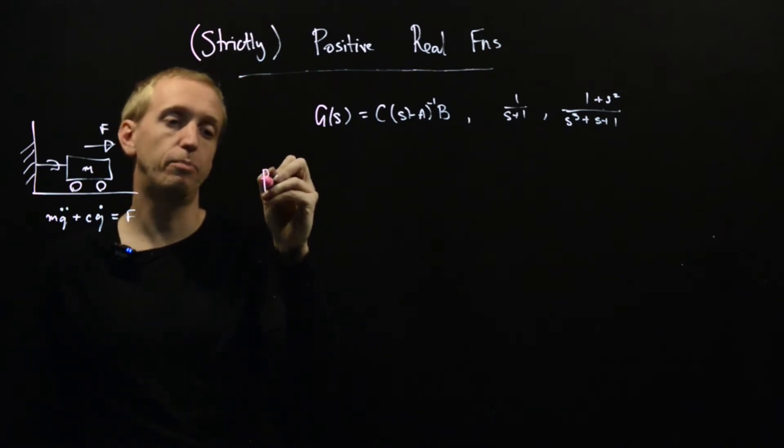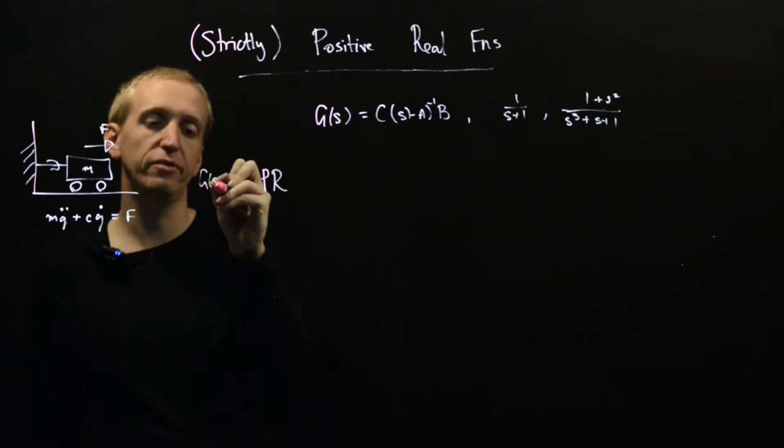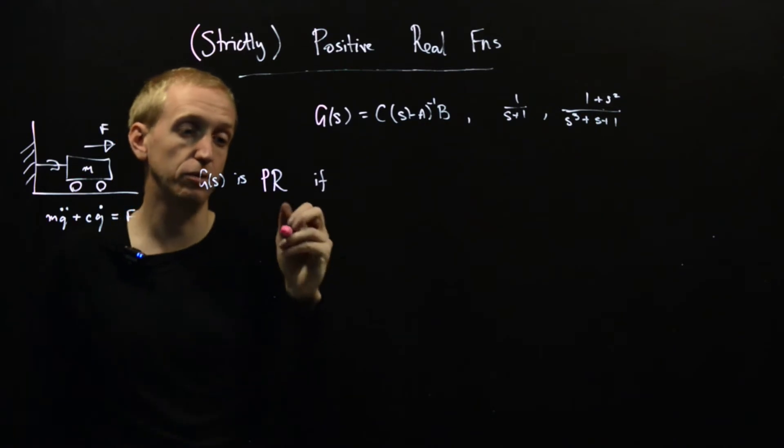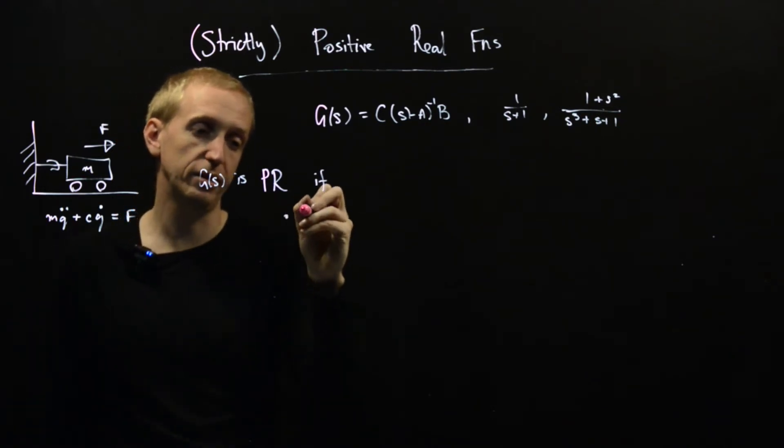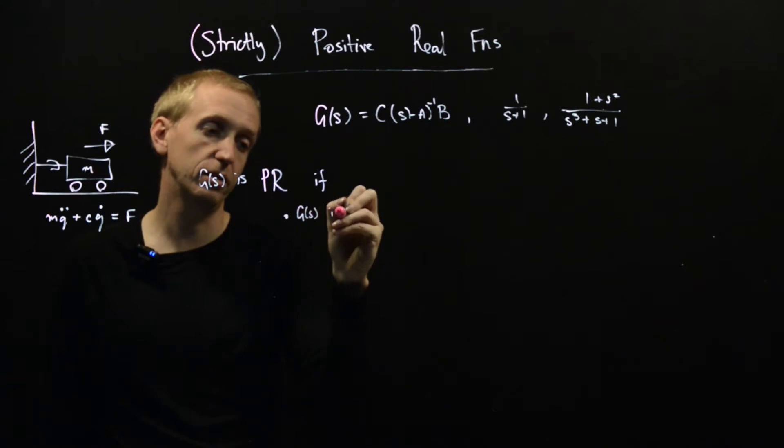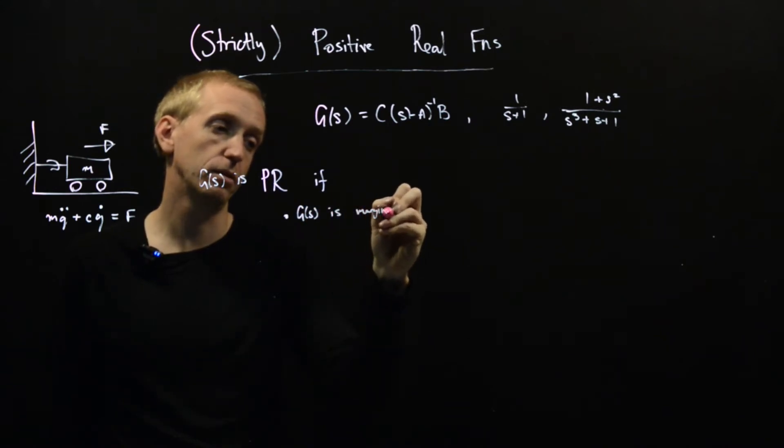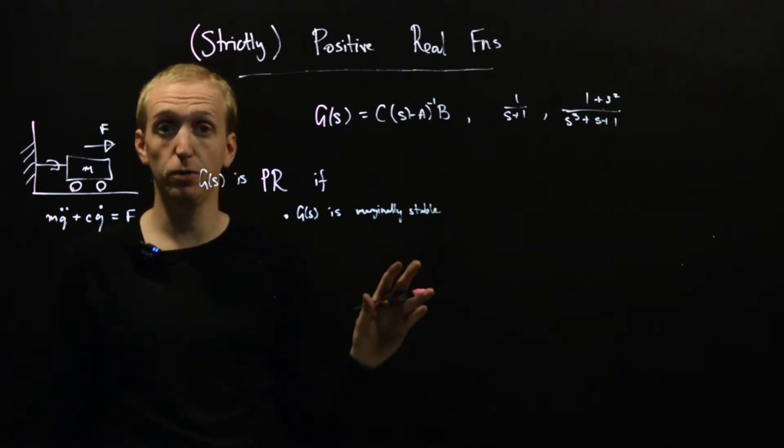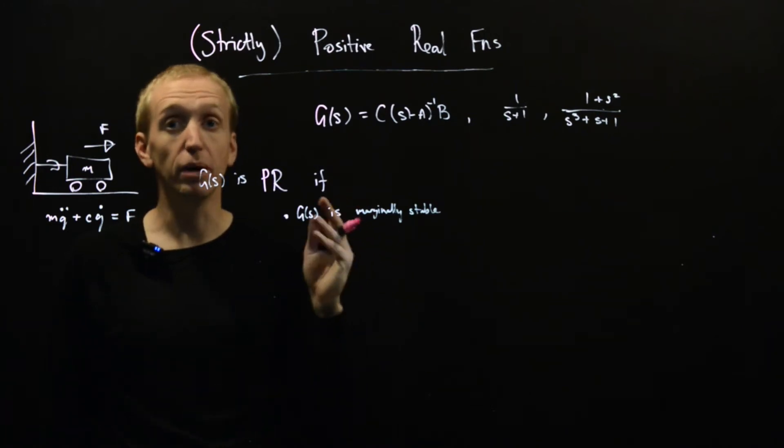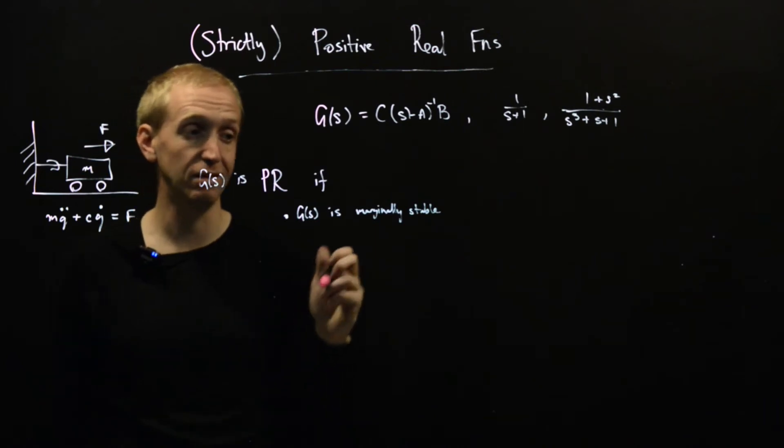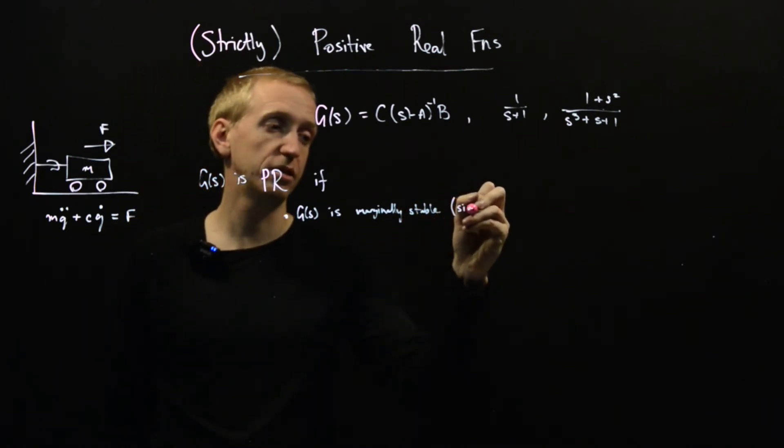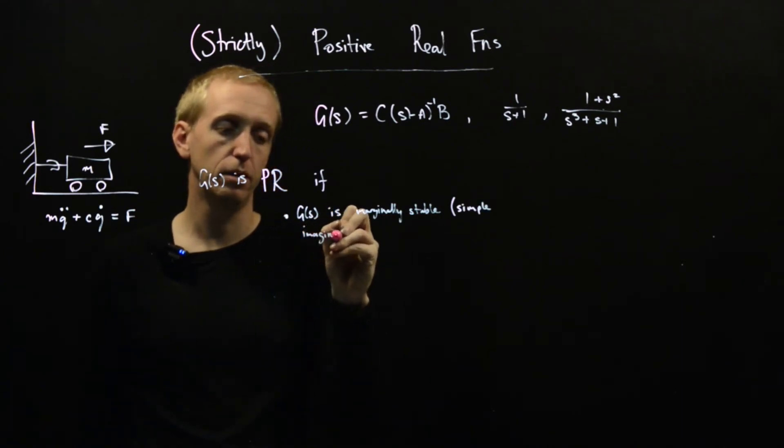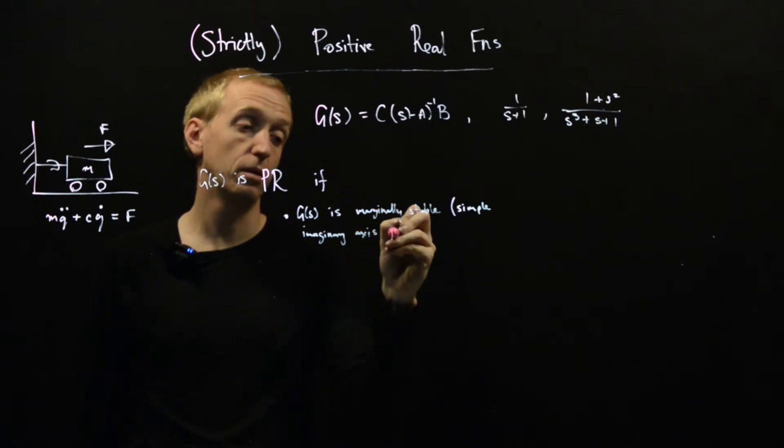So what are the positive real and the strictly positive real functions? Well, positive real, so g of s is positive real if the following two criteria hold. The first is that g of s is marginally stable. So this means all its poles have to be in the left half plane, but you're allowed imaginary axis poles as long as they're simple. So we can have simple imaginary axis poles.